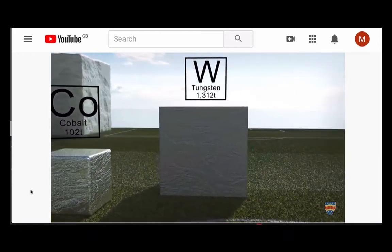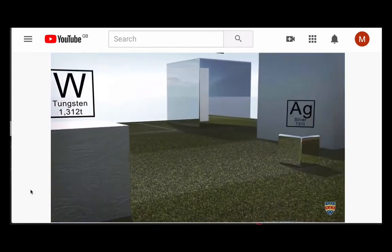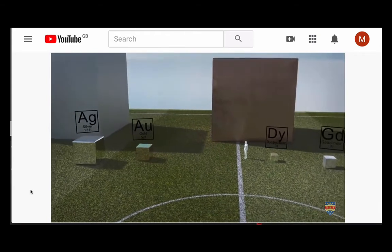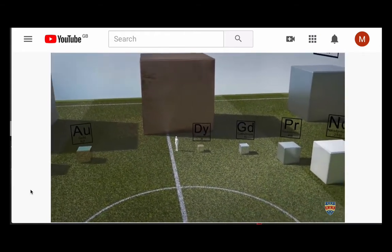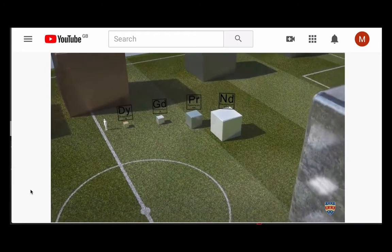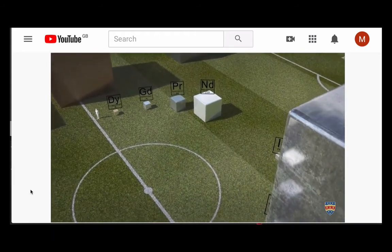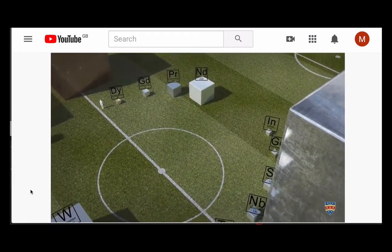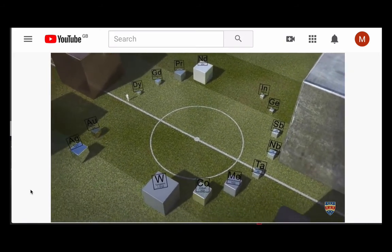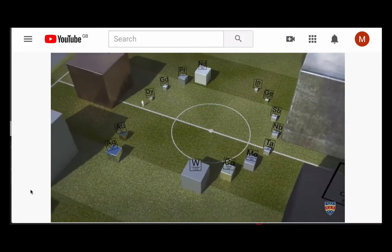3 tonnes of dysprosium is about the size of a chair. 8,700 tonnes of copper is about the size of a large house. 48,100 tonnes of iron is about the size of a block of flats.